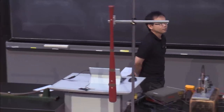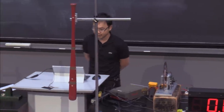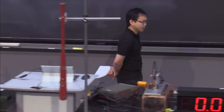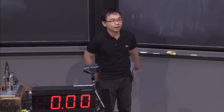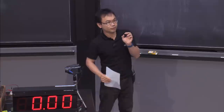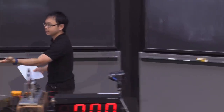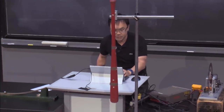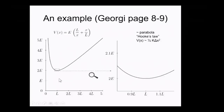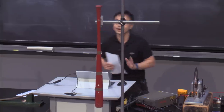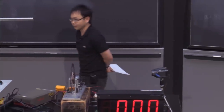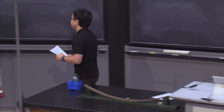I received several questions during office hours and through email and Piazza. There were some confusions about doing a Taylor expansion. In the lecture last time, the equilibrium position is at x = 0, so I do the Taylor expansion around 0. But if the equilibrium position or the minima of the potential is at x = L, then you need to do a Taylor expansion around x = L. I hope that will help you with the problem set question.